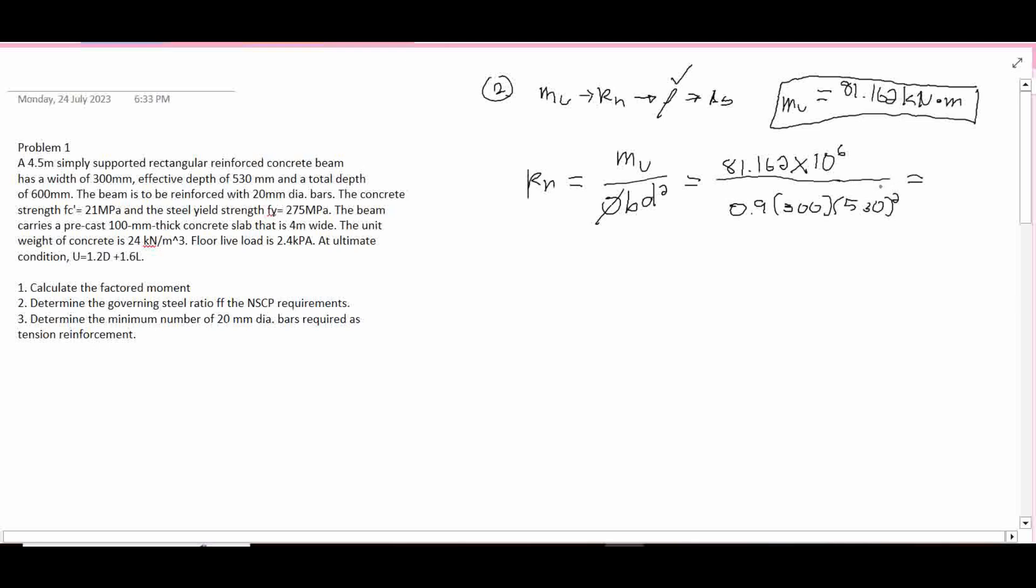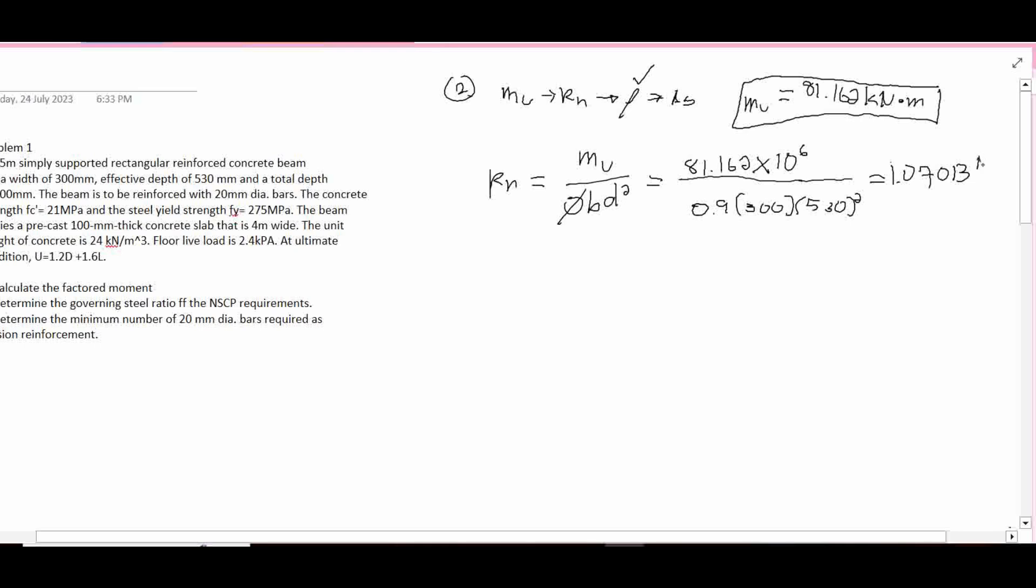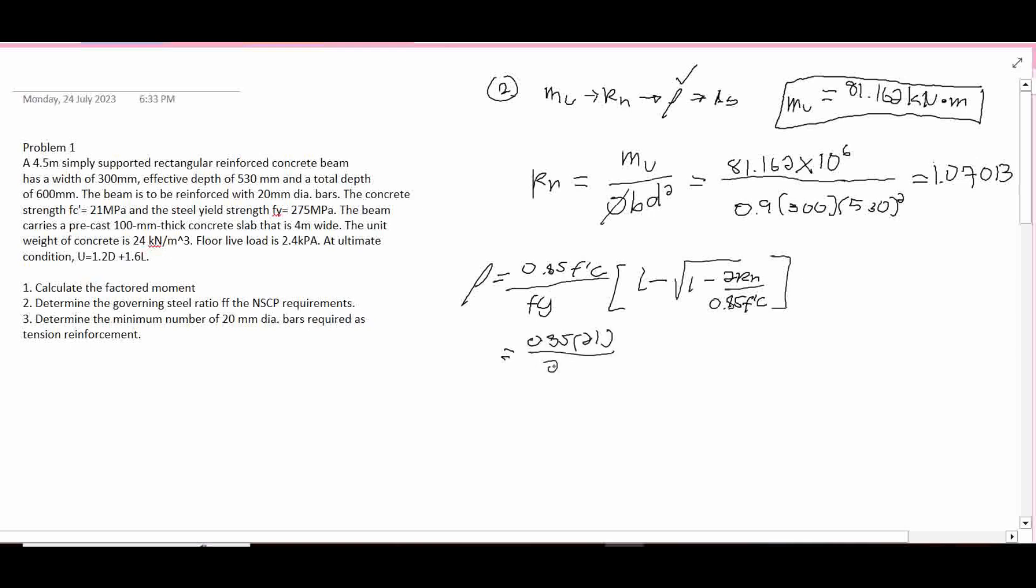This will yield to 1.07013, the unit for this one is newton per mm squared. Now our RN, we can solve for RO. RO is equals to 0.85 F prime C over FY times 1 minus square root of 1 minus 2RN over 0.85 F prime C. 0.85 times 21 MPa over 275 MPa, 1 minus 1 minus 2 times 1.071013 over 0.85 of 21 MPa.